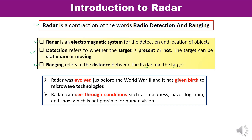Radar was evolved just before World War II, simultaneously in Great Britain, the US, Germany, and France. Radar gave birth to microwave technologies. Radar can see through conditions such as darkness, haze, fog, rain, and snow — conditions where human vision is not feasible. So radar can operate under various unfavorable weather conditions. The first radar worked at a very low frequency of approximately 60 MHz due to the lack of sufficiently powerful transmitting tubes. The development of modern radar started in 1940 with the cavity magnetron.